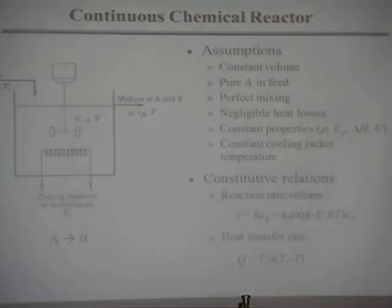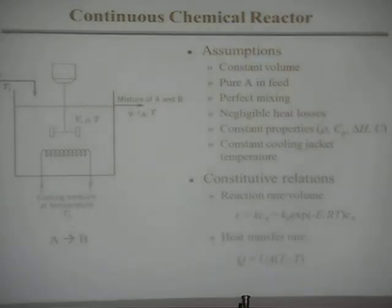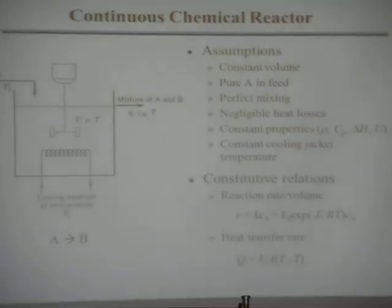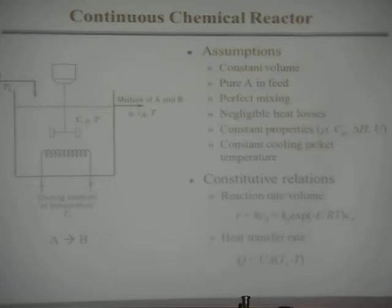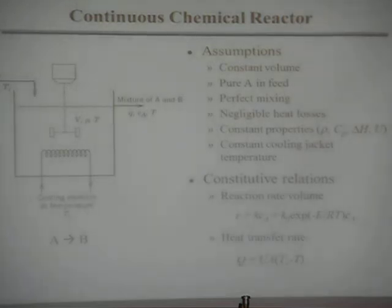We put it in this reactor and react it. It generates a lot of heat, so we have to remove the heat — in this case we have a cooling coil. The reactor has constant volume V, constant density rho, and is at some temperature T. Coming out of this reactor, unless you have 100% conversion, it's some mixture of A and B. The same flow rate comes in as goes out because of constant density and constant volume. The outlet temperature is almost certainly higher than the inlet temperature because you're generating heat.